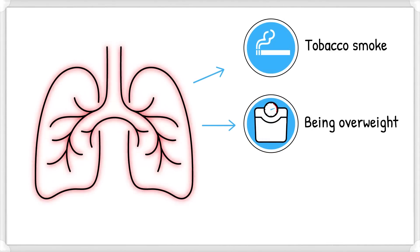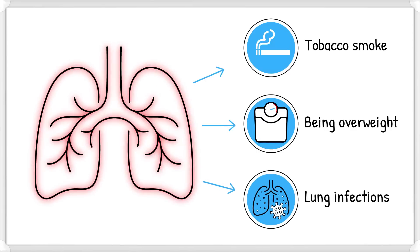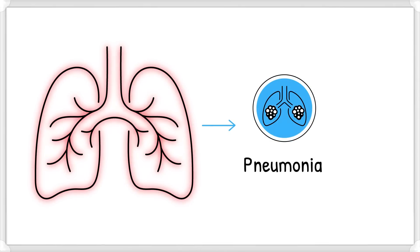Irritants such as tobacco smoke, being overweight, and having repeated respiratory infections worsen the symptoms of AATD and cause more significant damage to the lungs. AATD can also increase the risk of severe infections such as pneumonia.